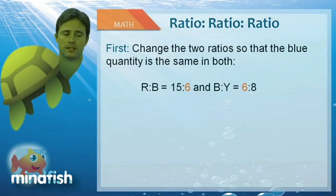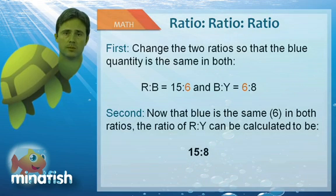Now we have red to blue is 15 to 6, blue to yellow is 6 to 8. Now that the middle term 6 is the same, we can go across from red to yellow, and thus the answer would be 15 to 8.